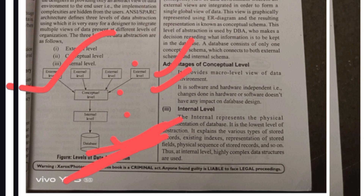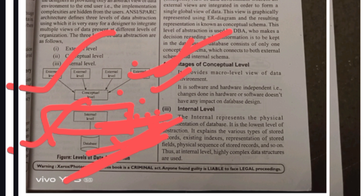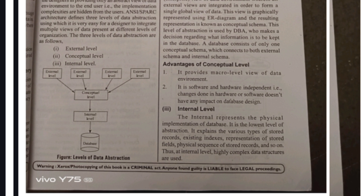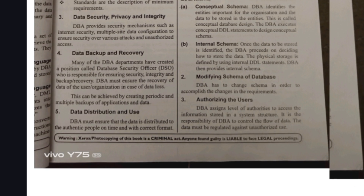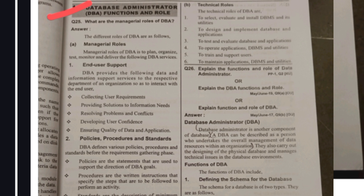The advantage of the Conceptual Level is that it provides a macro level view of the data environment, and it is software and hardware independent — it does not impact database design. The Internal Level represents the physical representation of data. This is the lowest level where everything is stored — in fields, physical sequences, stored records, and so on. No person can view the internal level directly.